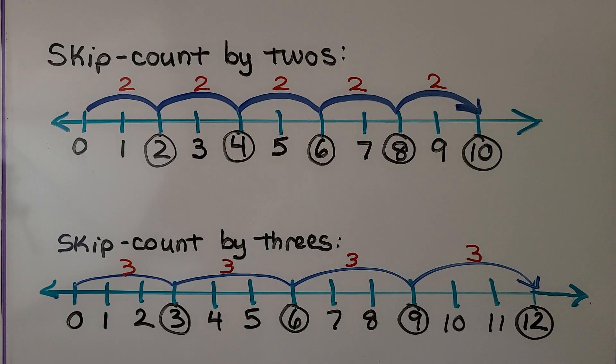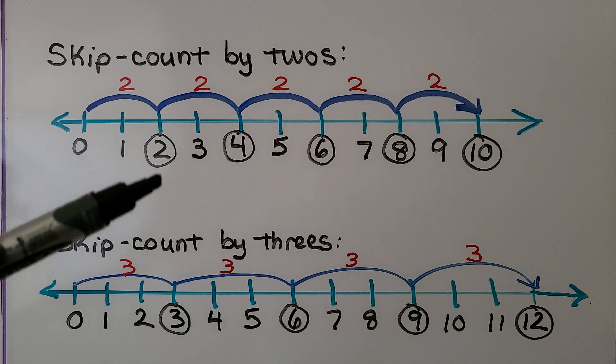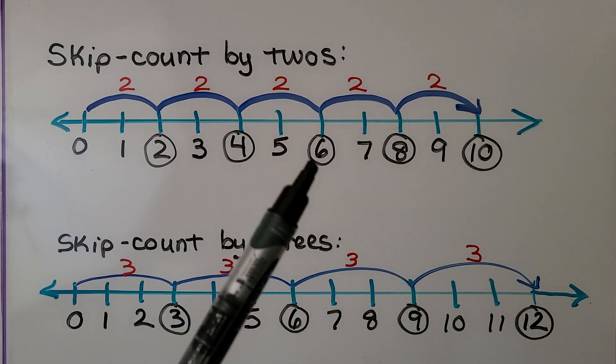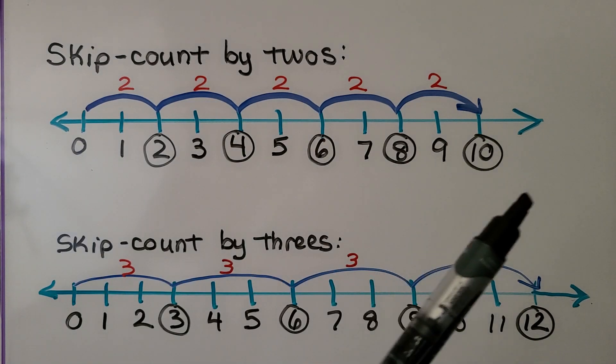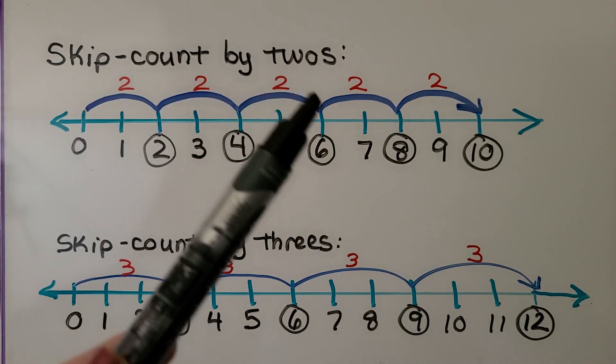When we skip count by twos, this is what it looks like on a number line. Here's zero and we skip count 2, 4, 6, 8, 10, and we can keep going. We're skipping by twos.